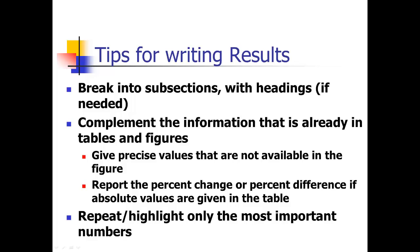Similarly, if a table shows absolute values — say bad witches exercise 30 minutes a day and good witches 60 minutes a day — rather than repeating those numbers, you could give the percent difference. For instance, 'good witches exercise twice as much every day as bad witches.' That's complementary information rather than just repeating what's in the table.